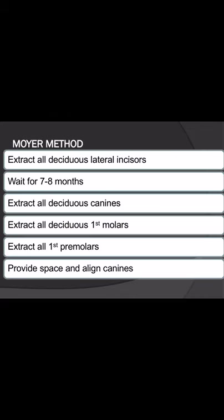Moe's method is slightly different. Here, extraction of all deciduous lateral incisors (B) is done first, followed by a wait of seven to eight months. Then all deciduous canines (C), all deciduous first molars (D), and then the premolars are extracted sequentially, providing space and allowing canines to align. The sequence for Moe's method is: B, C, D, 4.